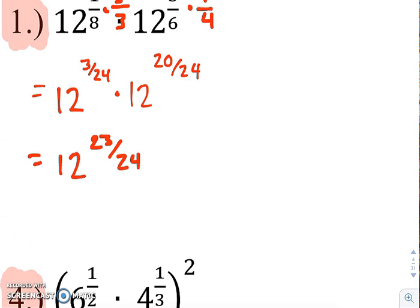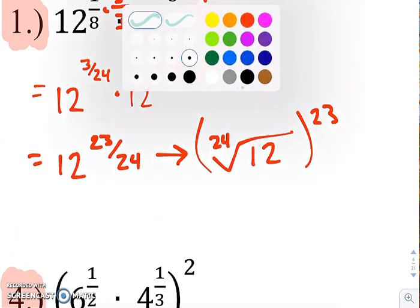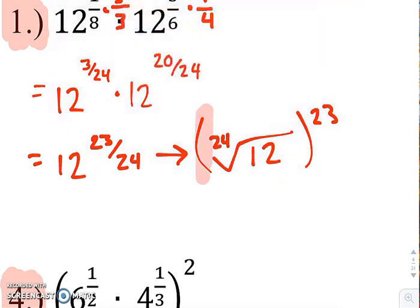And we can't have exponents that are fractions, so we're going to rewrite this as the 24th root of 12 to the 23rd power. Denominator is index, the numerator becomes your exponent or your power. So same exponent rules, it's just that your exponents are now fractions instead of whole numbers.